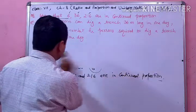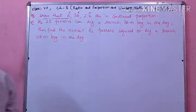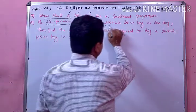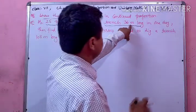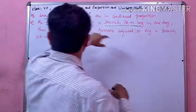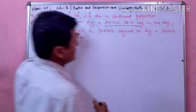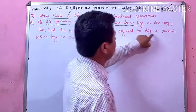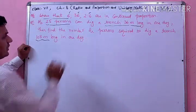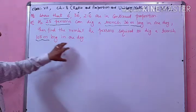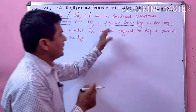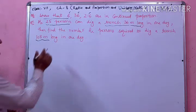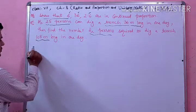Seventh question के अंदर unitary method का use करेंगे। इसके अंदर given है: if 25 persons can dig a trench 36 meter long एक दिन में, in one day. Then find the number of persons required to dig a trench 108 meter long in one day. तो 108 meter long trench खोदने में कितने persons की आवश्यकता होगी। ज्यादा लंबी खोदनी है तो ज्यादा persons use होंगे।